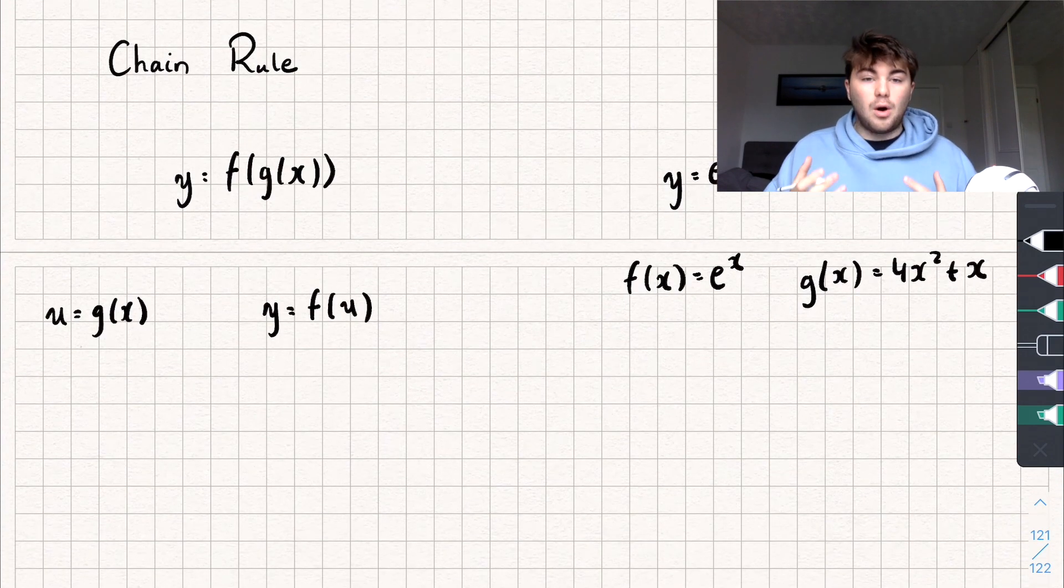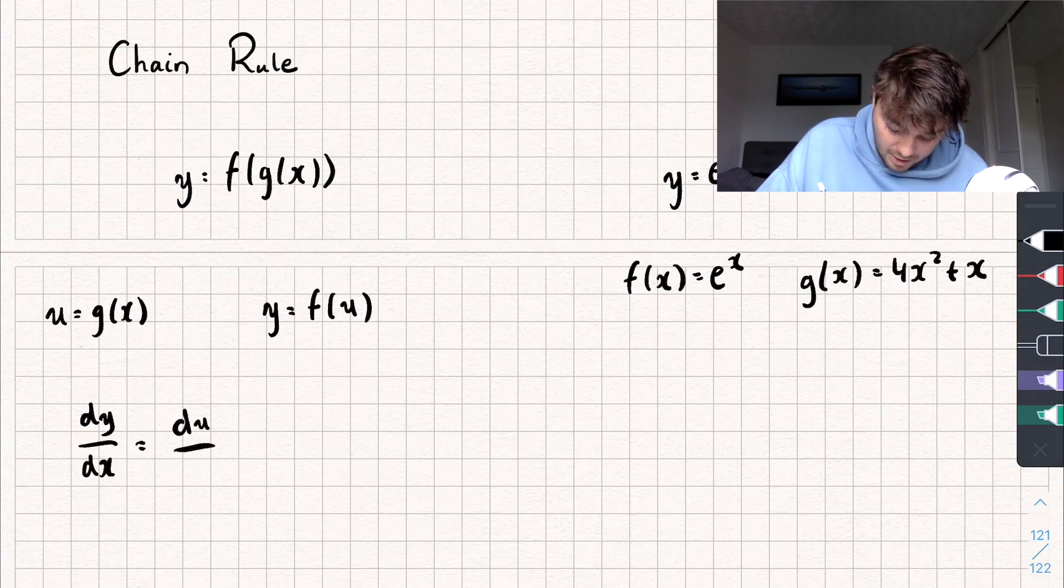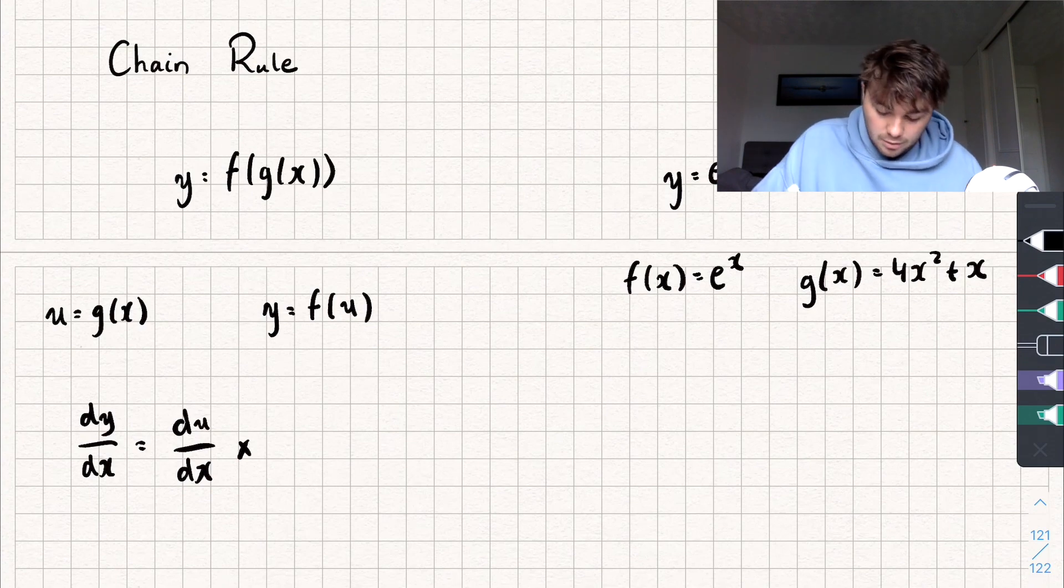And so if we want dy by dx, so we want to find the derivative of y with respect to x, the chain rule says that that is equal to the derivative of u with respect to x, so du by dx. And then we multiply that by the derivative of y with respect to u, so dy by du.